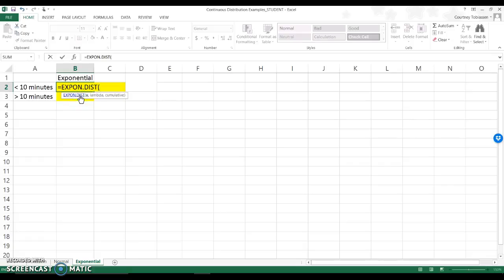And it is asking me for x, which in this case is 10 minutes per hour. So you can say 1/6, you can divide that out, you can make that a decimal. I'm just going to type it in like that. It is asking me for lambda, which is the average that it takes, so 5 per hour. And this is cumulative.